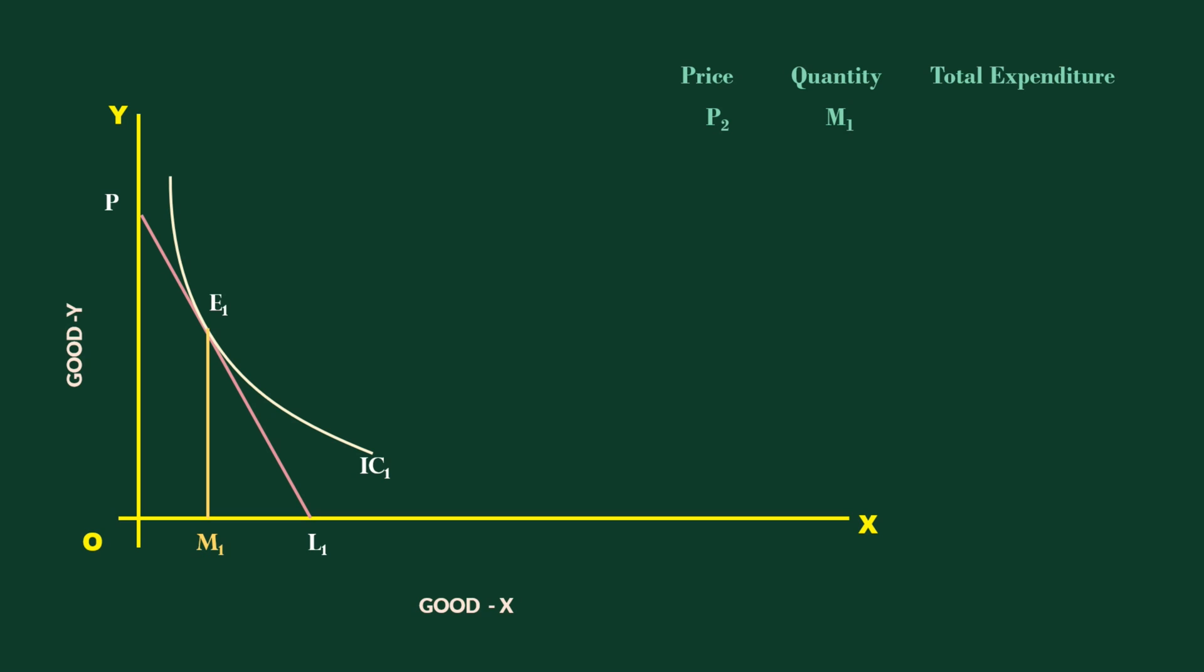The number of units of good Y that have been sacrificed is the total expenditure on good X. It is PN1 units of good Y. I have taken the physical quantity and not the money value of good Y for two reasons: one, to reduce complexity, and two, it will not affect the final result.